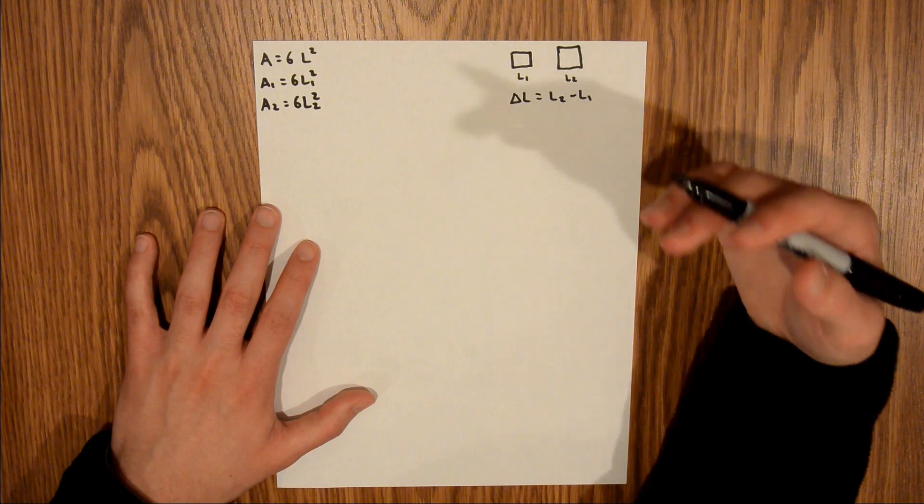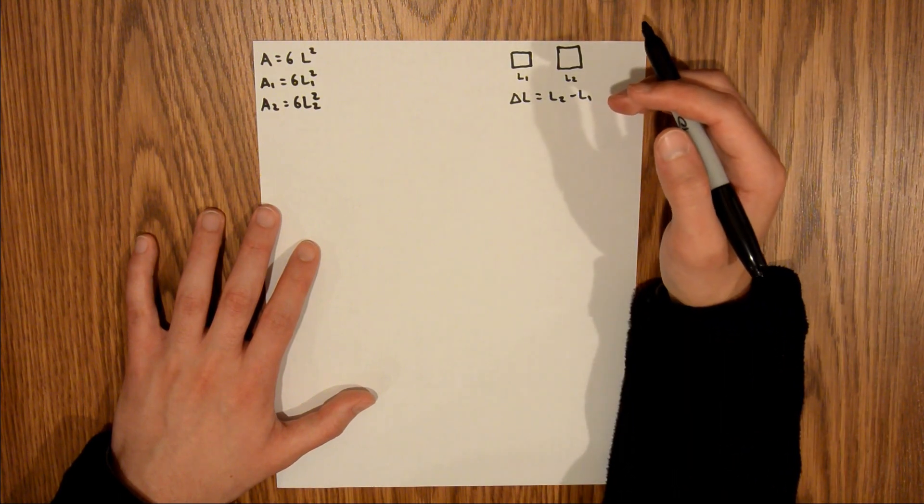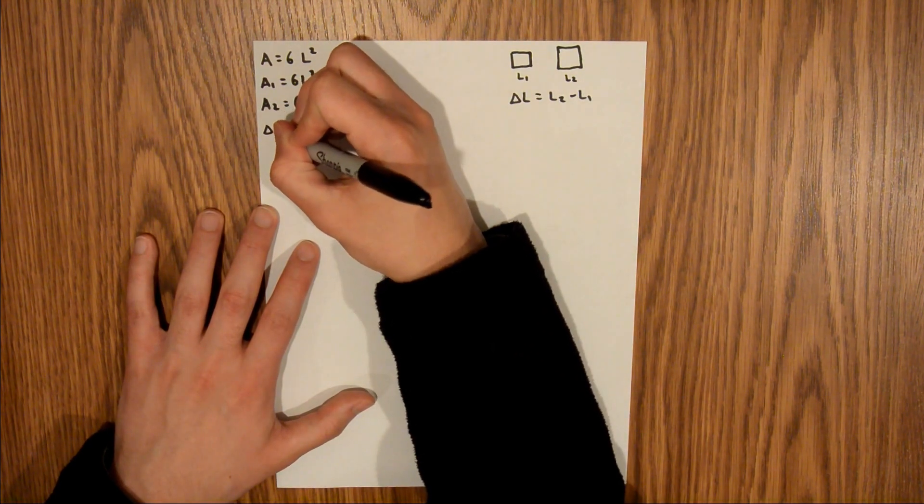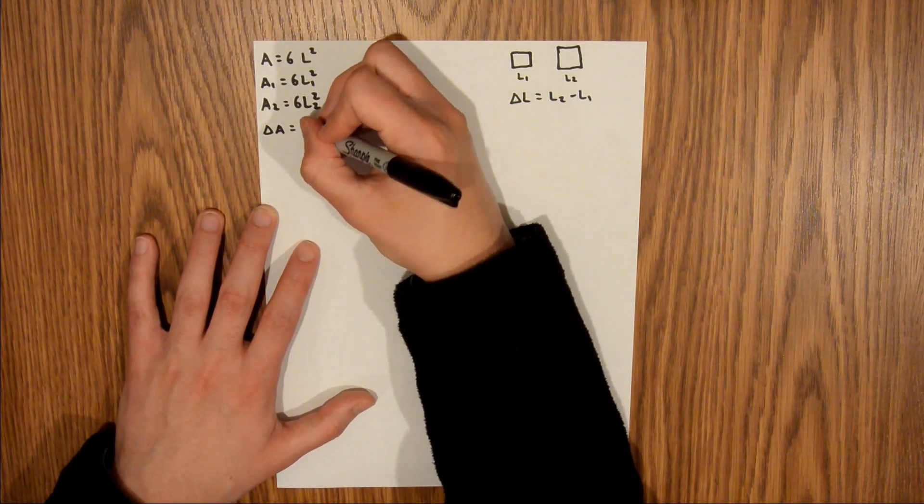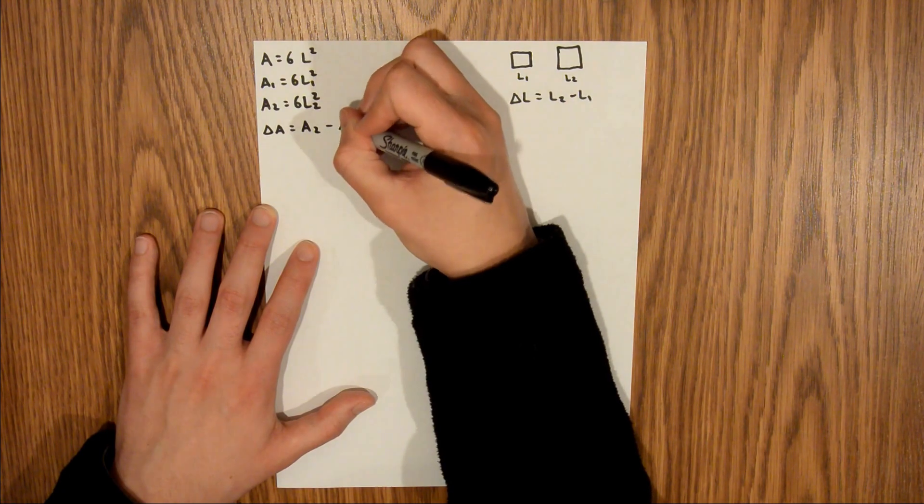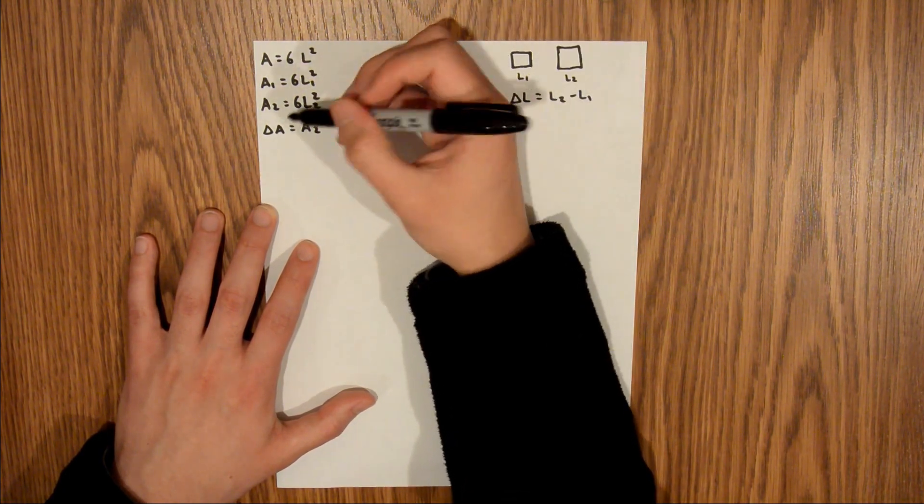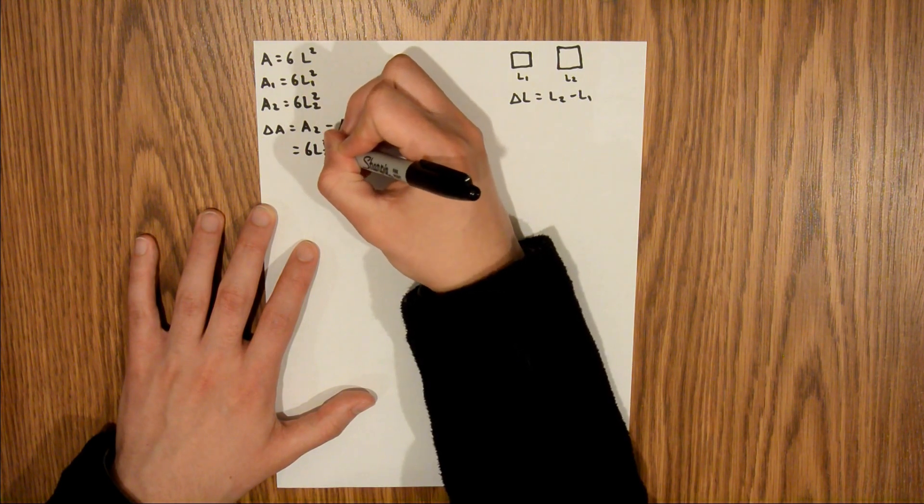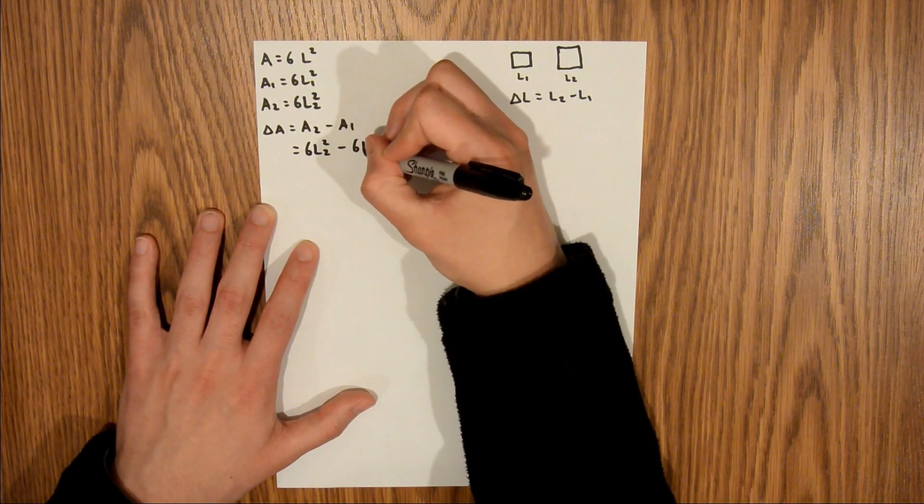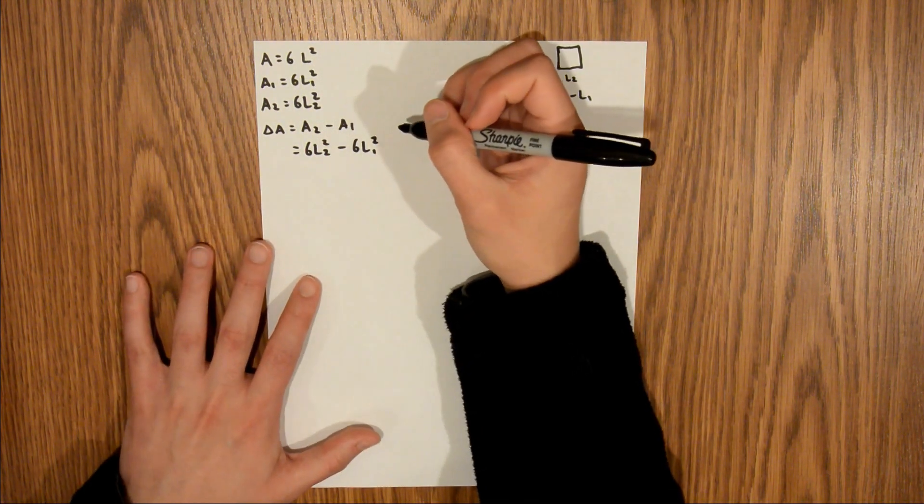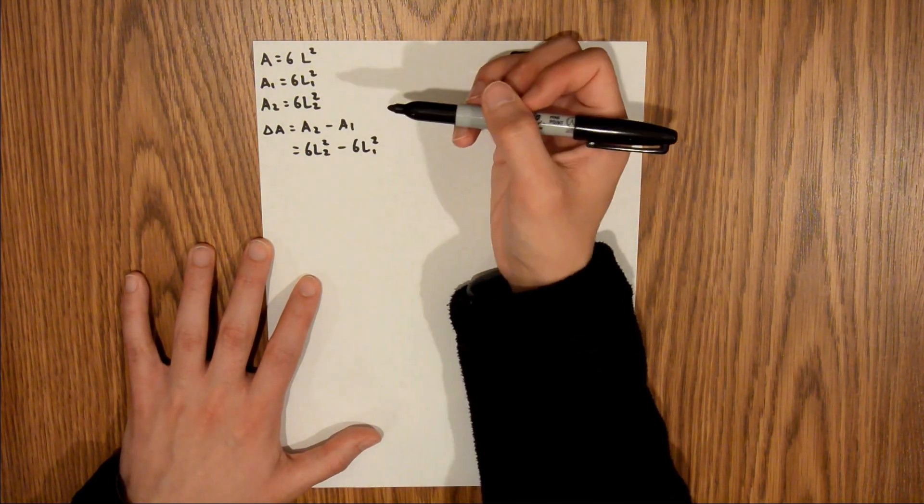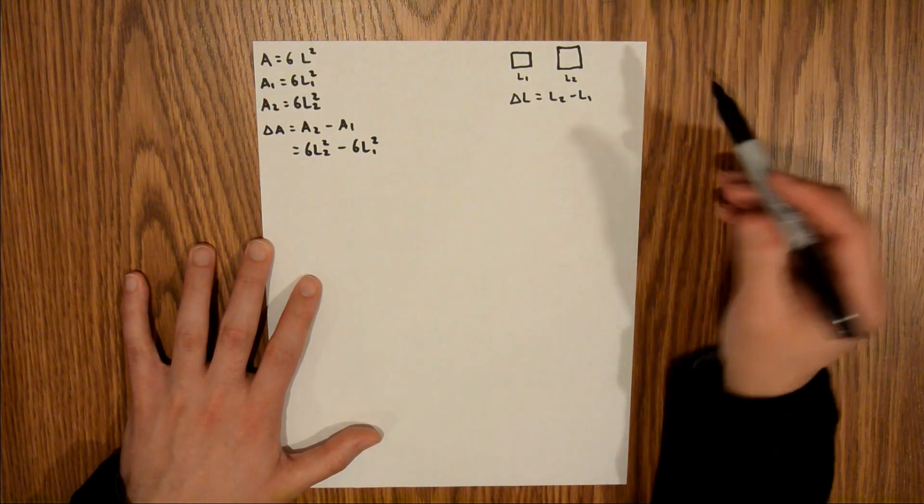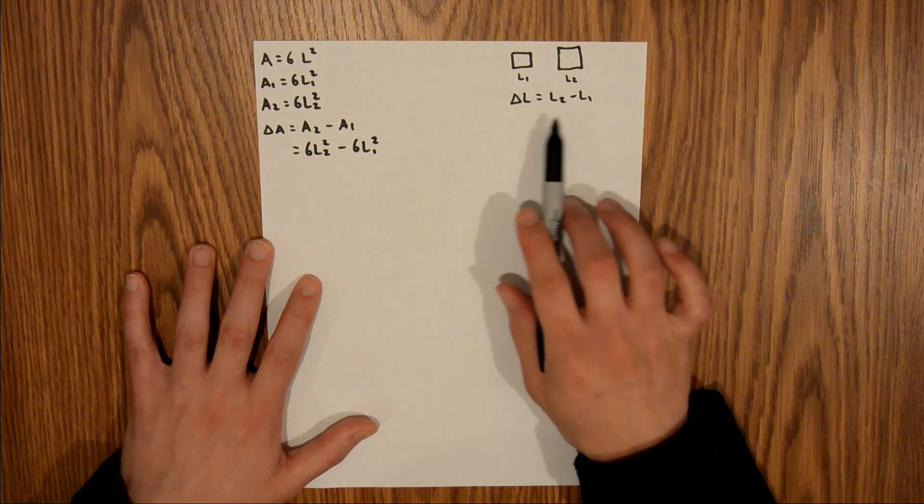And now since we are looking for an increase in surface area, which is the same thing as saying we're looking for a change in area, we can say the change in area is equal to A2 minus A1. And we just found both of those right here. So we can just plug those in. Six L2 squared minus six L1 squared. And now we're given L1 in the problem, but we don't know what L2 is. So we need to write it in terms of things we do know or things we can solve for.